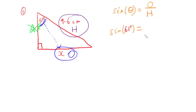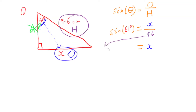On the right-hand side, I put my opposite side on top, which is X, and divide by the length of the hypotenuse, which is 9.6. Now I need to isolate X, so I multiply both sides by 9.6. On my next line of working, I have 9.6 multiplied by sine of 61 degrees.